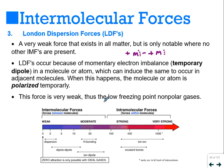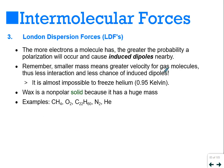In isolation, one singular LDF is very weak. This explains the low freezing point of nonpolar gases. But when you collect many of them, they can make substances solid. The more electrons a molecule has, the greater probability of polarization causing induced dipoles. Smaller mass means greater velocity for gas molecules, thus less interaction and less chance of induced dipoles. It's almost impossible to freeze helium—less than one Kelvin. When something naturally has very little attraction and very large velocity, freezing it is extremely difficult because the only force holding them together is London dispersion forces.